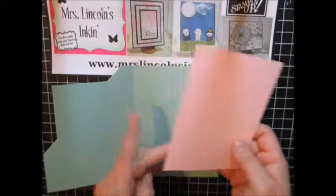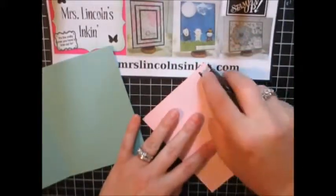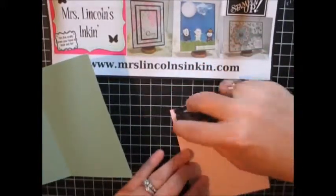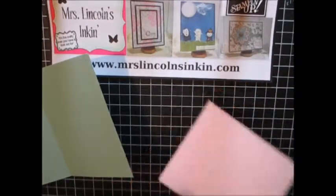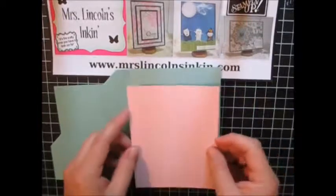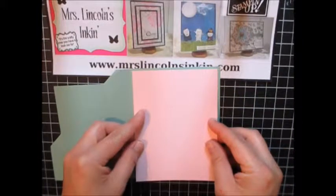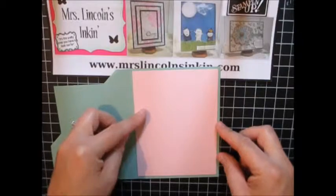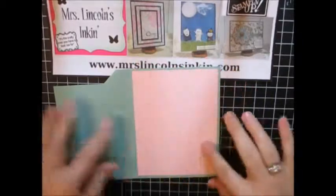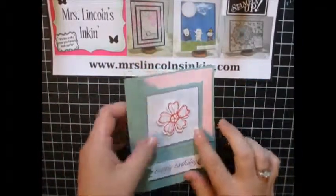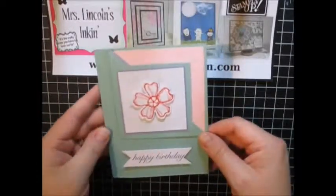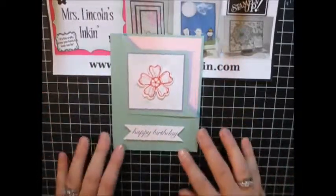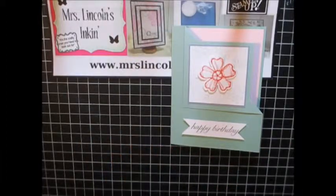Now to finish off the card, I have a piece of Pink Pirouette. And this is cut at 4 by 5 and 1⁄4. And I'm just going to place this right on the inside so I can do my writing to my recipient here. There we go. Plus I think it's really important to have another card back there because it just makes this part right here stand out so much more. So just a super simple card today for the fun fold corner.